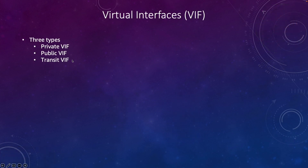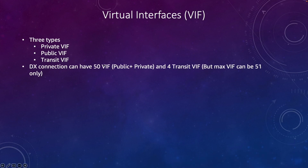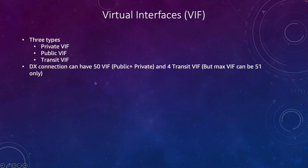We have three different types of virtual interfaces: private, public, and transit. Over a dedicated Direct Connect connection you can have a maximum of 51 virtual interfaces, out of which you can have max 50 public or private interfaces and 4 transit interfaces. So if you are creating 4 transit VIFs you can have a maximum of 47 public or private VIFs because the total cannot be more than 51.